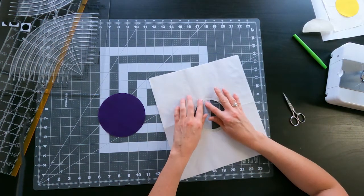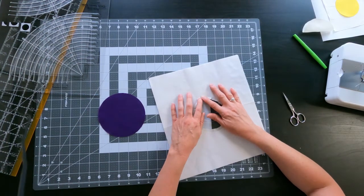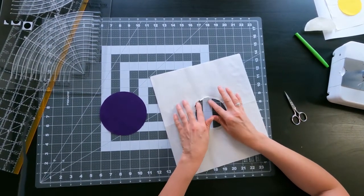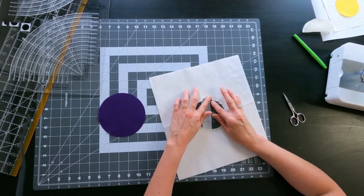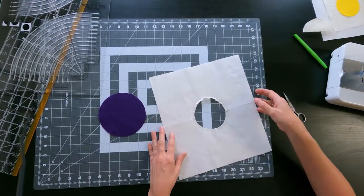Now what we're going to do is take this back to the iron and we're going to fold all of these over onto the back of the freezer paper. We're going to press them down. If you've got some starch or even just some water, something to help that get nice and flat is always helpful.